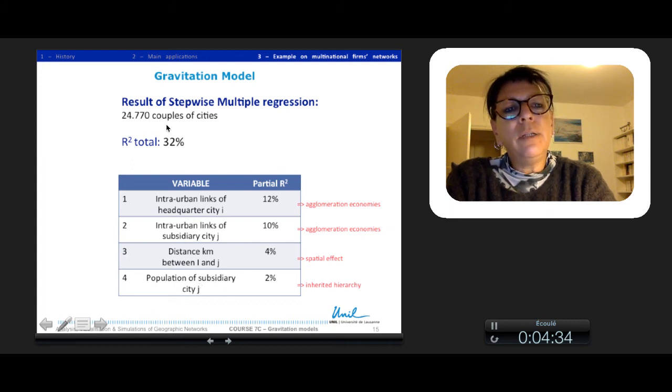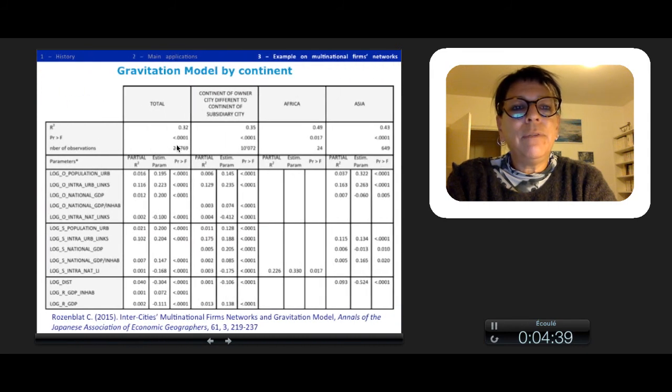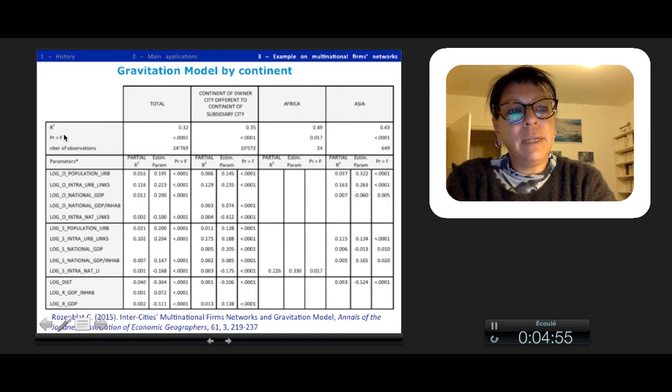According to this quite bad results, I tried with different continents. I differentiate here we have the total, we have the R-square, here we have the general significance, the number of observations, and the different parameters with all the attributes of the owner city, all the attributes of the subsidiary, and all the attributes of distance with the partial R-square, the estimated parameters, and the probability.